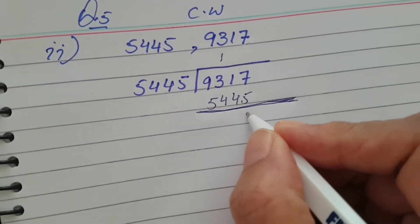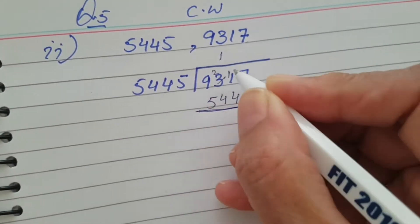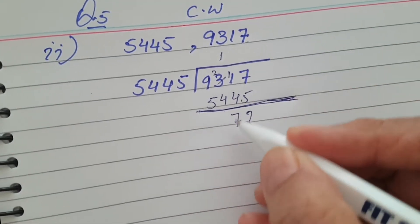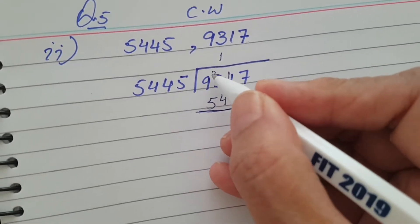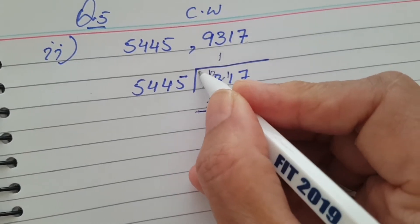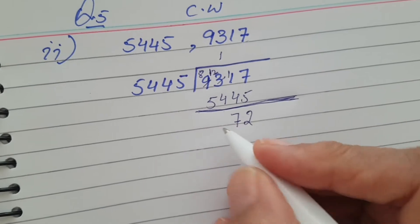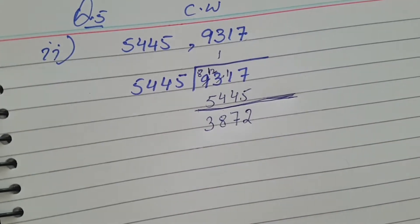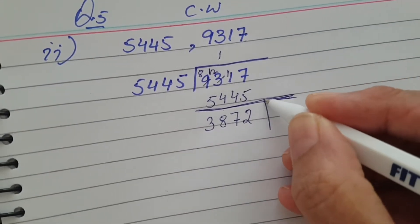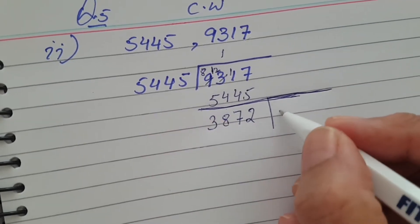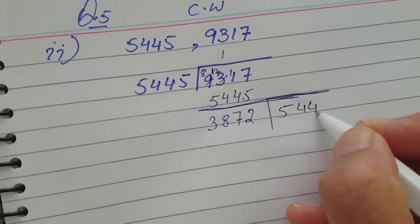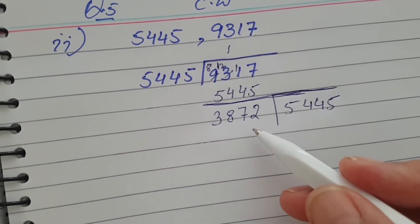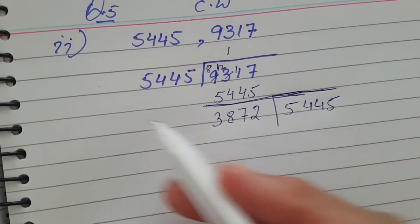After subtraction: borrow as needed — the remainder will be 3872. In the long division method, the remainder becomes your new divisor and the previous divisor becomes your new dividend. So now 5445 is the dividend and 3872 is the divisor.